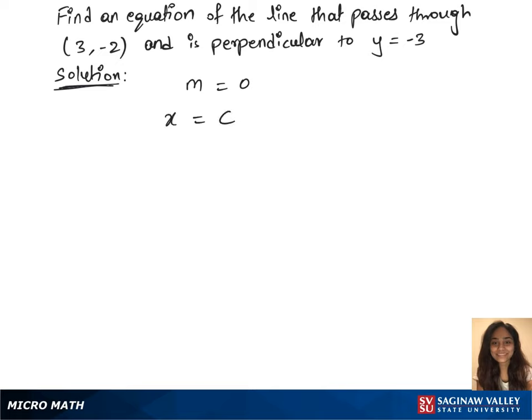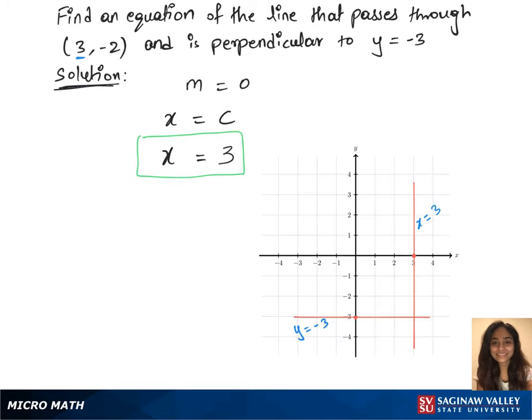Now plug in the C value, which is 3 — that's the x-intercept. So x equals 3 is the equation of the line that is perpendicular to y equals negative 3, and the graph looks like that.